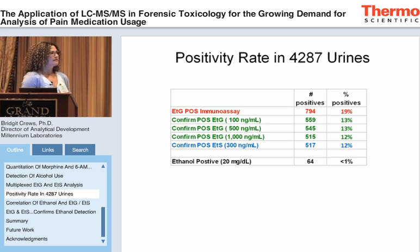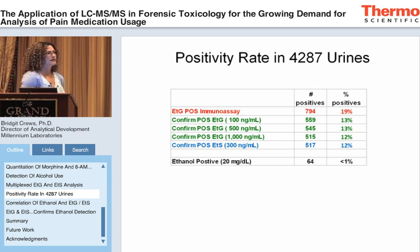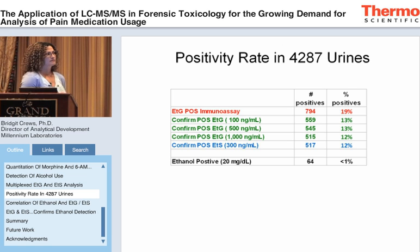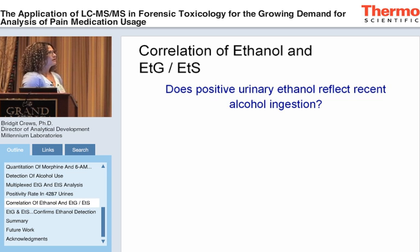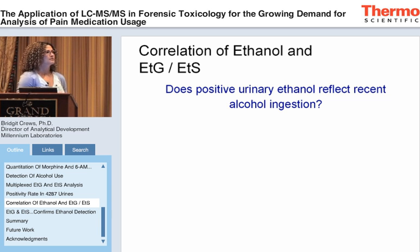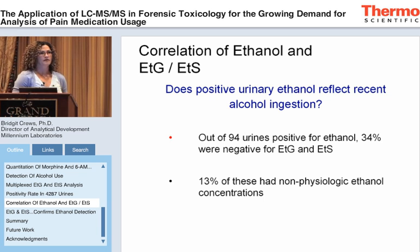Comparing to ethanol: if you're only testing with ethanol, you would catch less than 1% of patients as using alcohol, whereas the National Institute on Alcohol Abuse and Alcoholism estimates around 8.5 to 15% of the population has an alcohol dependency issue. So ETG and ETS are really needed as good markers for alcohol consumption. We then wanted to correlate ethanol to ETG and ETS, asking: does a positive urinary ethanol concentration reflect recent alcohol ingestion? We screened 10,000 urines for ethanol using an enzymatic test and tested all 10,000 for ETG and ETS.